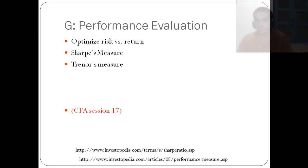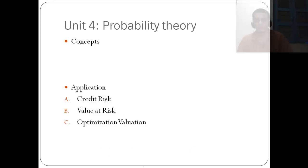So, a little bit of regression analysis is required. Then, we have the performance evaluation, the optimized risk versus return, the Sharpe ratio and the Treynor's measure are the three parts of this performance evaluation.